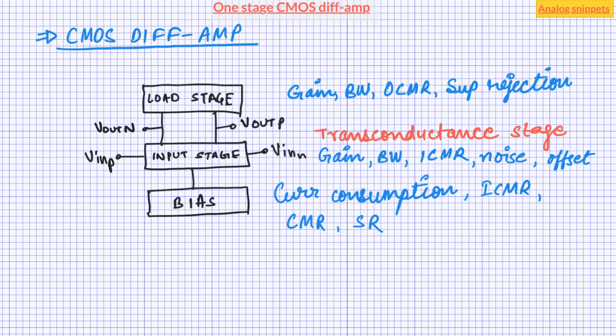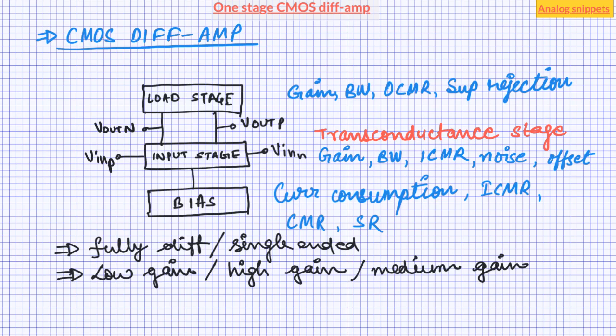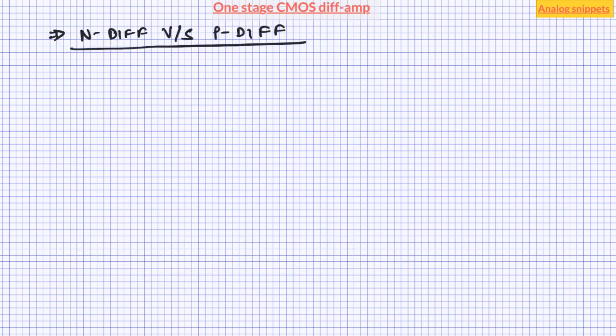We can classify differential amplifiers in many ways — for example, whether it has fully differential or single-ended output, low gain or high gain, whether the input stage is NMOS or PMOS, and so on. In this video, we'll look at various diffamp topologies without going too much into the design details. We'll use the NDIF amplifier to explain the topologies, but you can easily derive the PDIF topology.